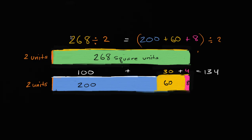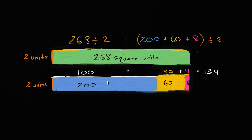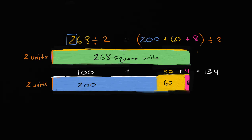We've already seen other ways of coming up with this. You can say: two hundreds divided by two is 100, six tens divided by two is three tens, eight ones divided by two is four ones. And that's exactly what we just did here, but we visualized it using this rectangle, breaking it up into chunks that are easier to imagine dividing by two. We broke it up into two hundreds, then six tens or 60, and then eight ones. We broke up the area, and then we divided each of those areas by two to find that part of the length. When you add them all together, you get the entire length.